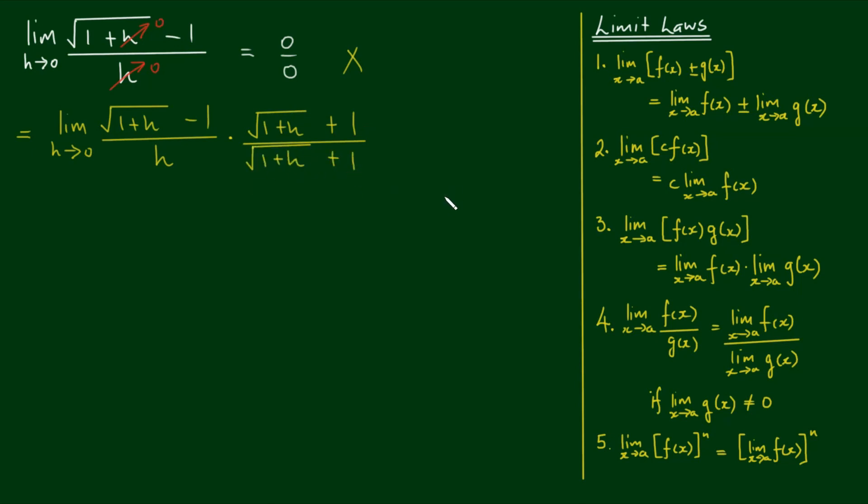So effectively, I've multiplied by 1. We have the limit as h approaches 0. The top is just a difference of two squares, so we have the square root of 1 plus h all squared minus 1 squared, divided by h times the square root of 1 plus h plus 1. The radical and the square cancel, so we have 1 plus h minus 1 squared goes to 1, and I'll leave the denominator as it is.